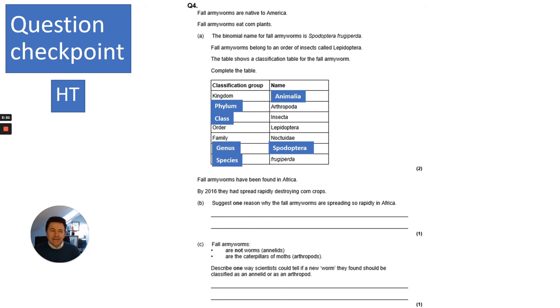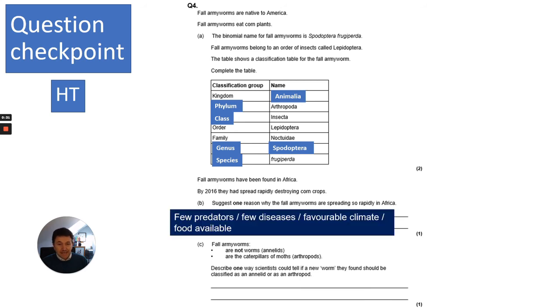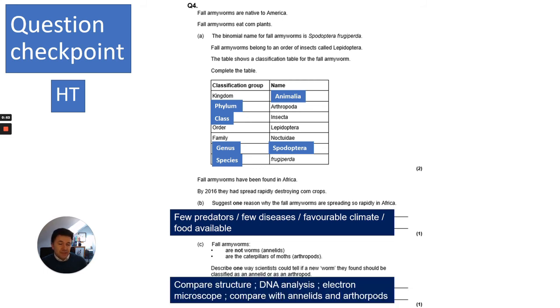The next question says fall army worms have been found in Africa. By 2016, they had spread rapidly destroying corn crops. It asks you to suggest one reason why the fall army worms are spreading so rapidly in Africa. This is not related to classification and is actually a question on competition and spreading of species in places where they have few predators, few diseases, a favorable climate, or food is available. It then asks about fall army worms, and not worms, they are caterpillars of moths. Describe one way scientists could tell if a new worm they found should be classified as an annelid or as an arthropod. Basically, they need to compare the structures. They could use DNA analysis. These are all examples of correct answers. Maybe use electron microscopes to compare annelids and arthropods.